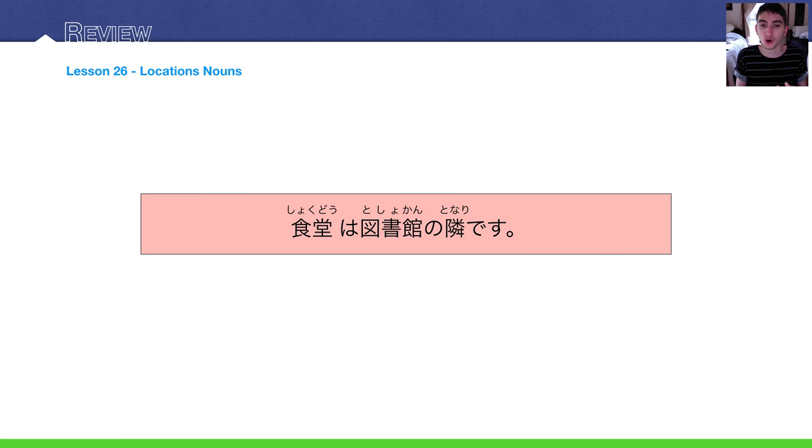Wa toshokan, library, no, the library's neighbor, neighboring, tonari. Tonari means neighboring, right? Desu. So, I would translate this to English as the cafeteria is next to the library or is neighboring the library.